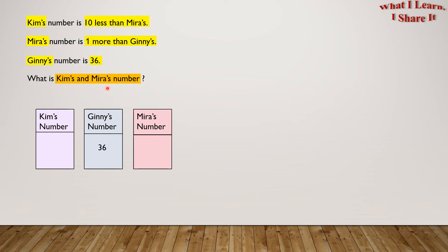Let's apply the working backwards strategy here. Mira's number is one more than Gini's, so it will be 36 plus 1 equals 37. Let's put Mira's number. Kim's number is 37 minus 10 equals 27. So let's put that.